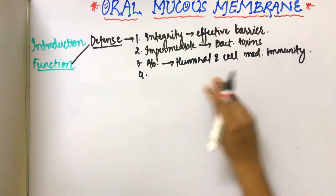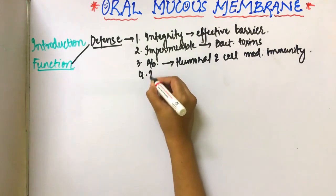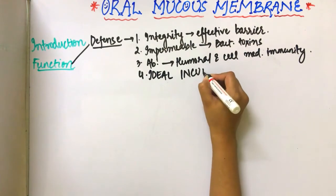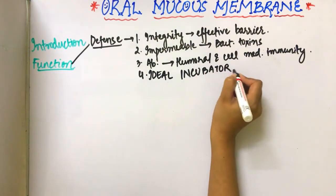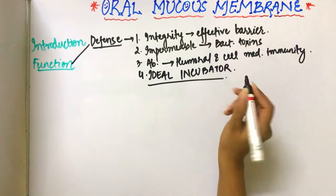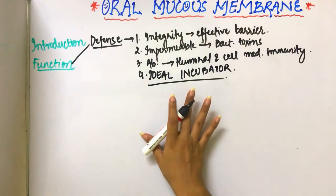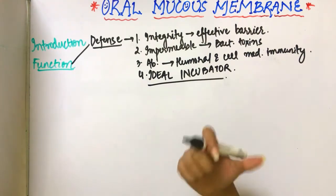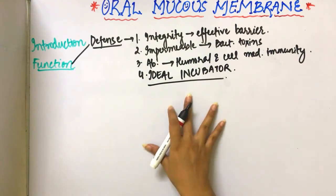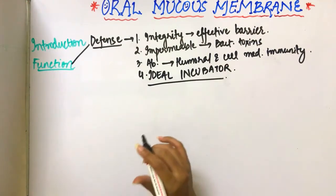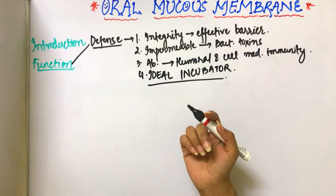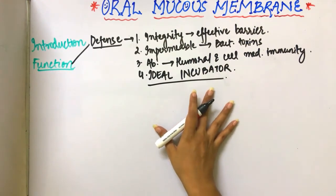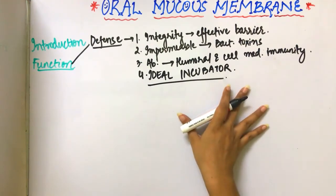The oral cavity is known as an ideal incubator. If the defense of the oral cavity is compromised, the commensal organisms would become pathogenic and start entering our body and releasing bacterial toxins. When infection occurs, the integrity of the epithelium is broken and bacteria invade into the epithelium.